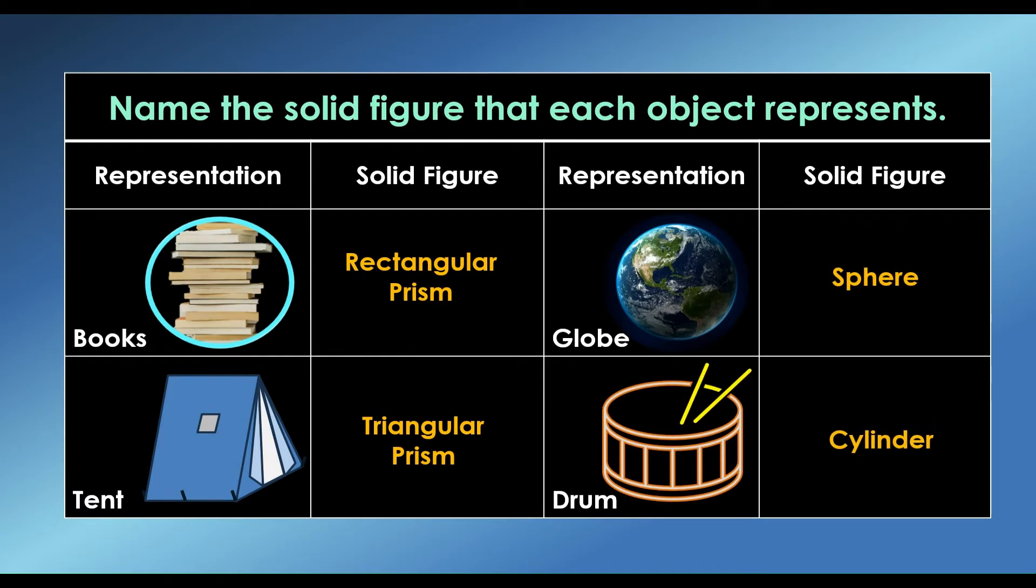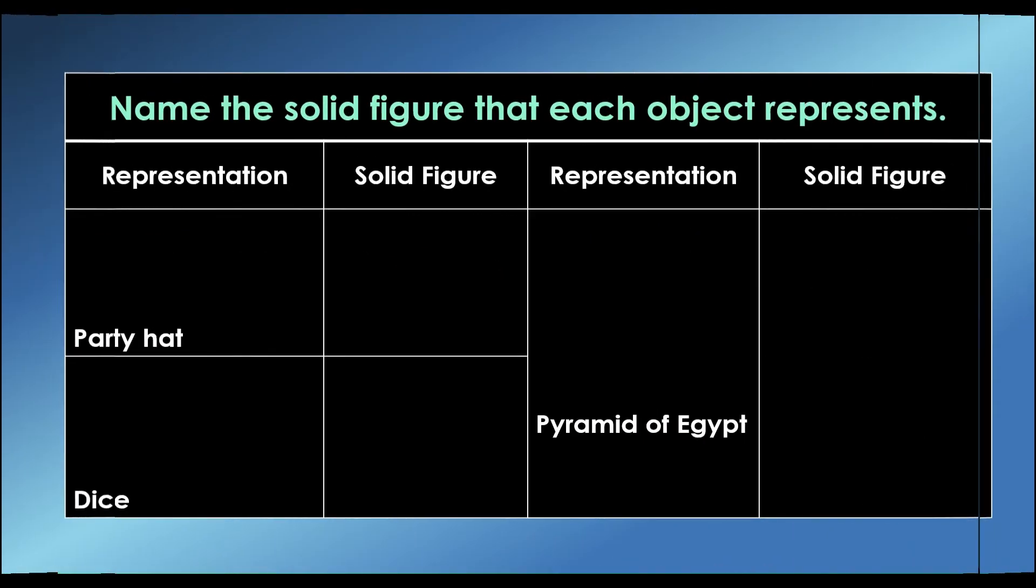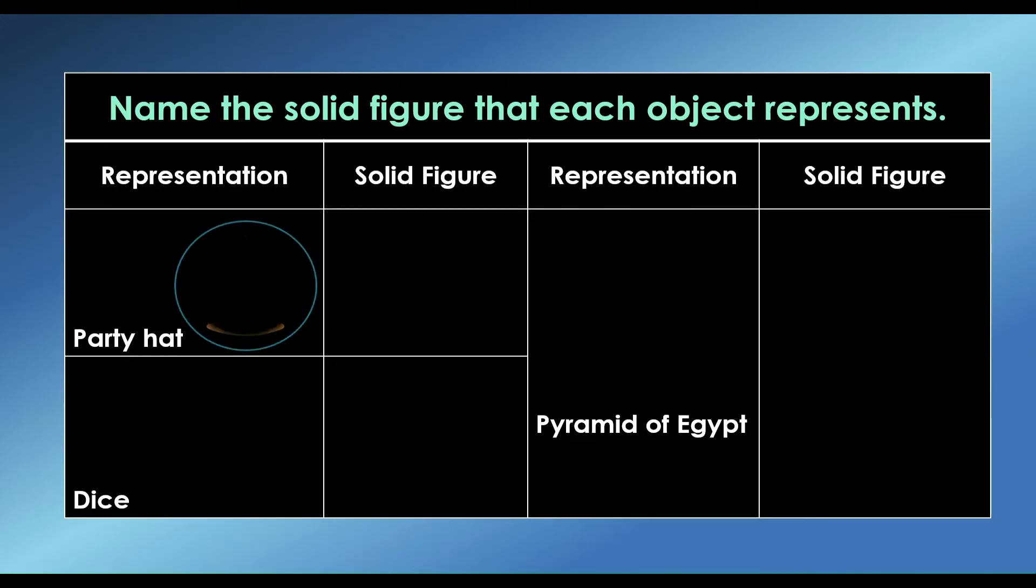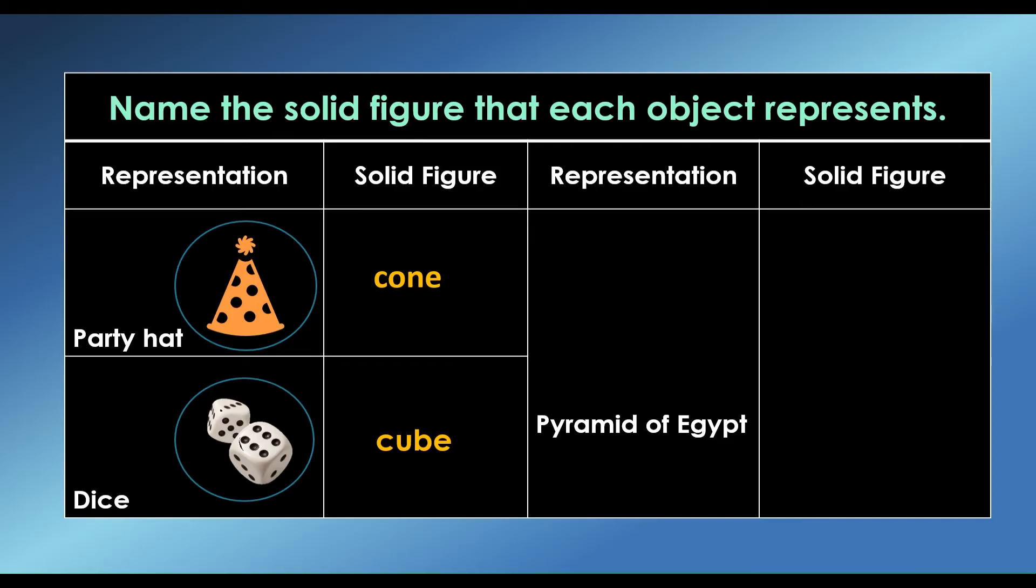We have a drum. A drum represents a solid figure of a cylinder. We have a party hat. A party hat represents a solid figure of a cone. We have dice. These dice represent a solid figure of a cube.